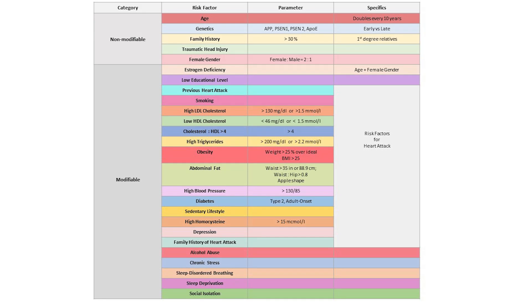Let's start by acknowledging that estrogen loss is a risk factor for Alzheimer's disease. Back in video 245, I presented all the risk factors and created a big chart. If you look at the first item in the modifiable category, you see estrogen deficiency. Estrogen deficiency is precisely what postmenopause is, so today we want to consider the different ways in which you can become estrogen deficient.